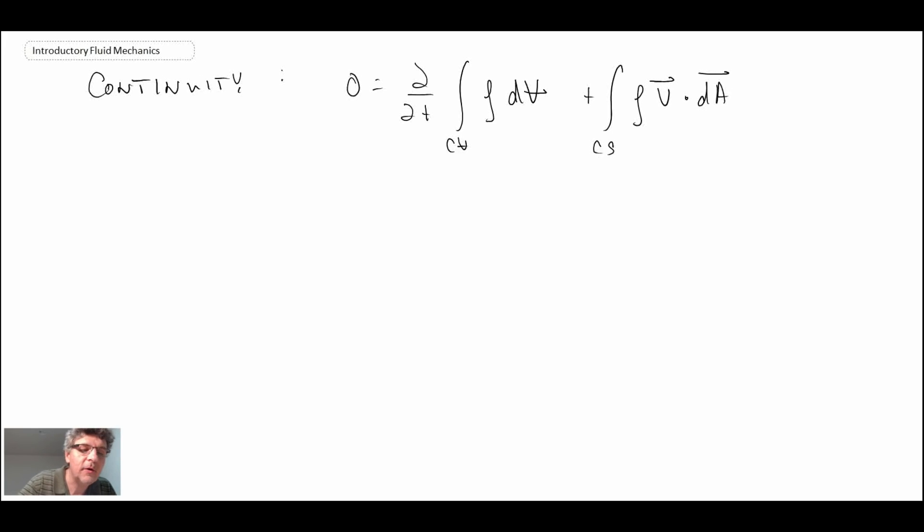So that is the continuity equation. We're dealing with steady flow, so that term disappears, and what we're left with is just the mass flux across the control boundaries, so your input and the exit. Have to be a little careful with the sign of that.